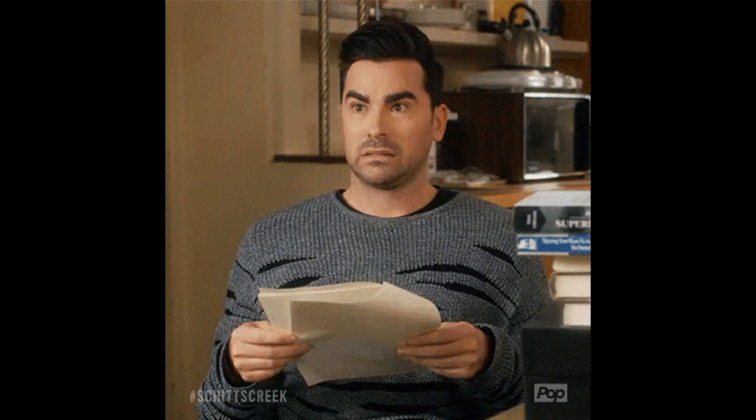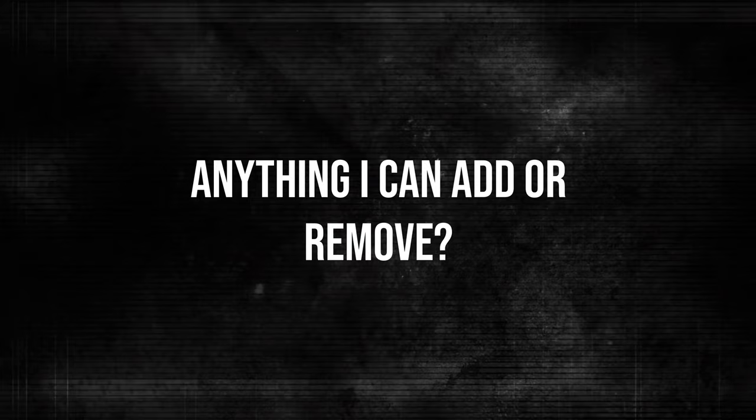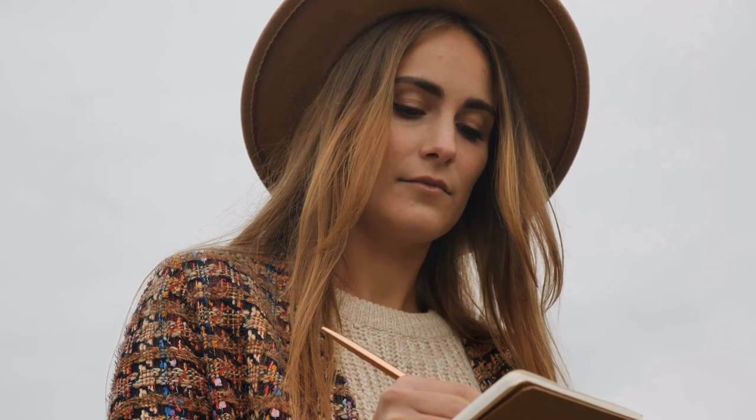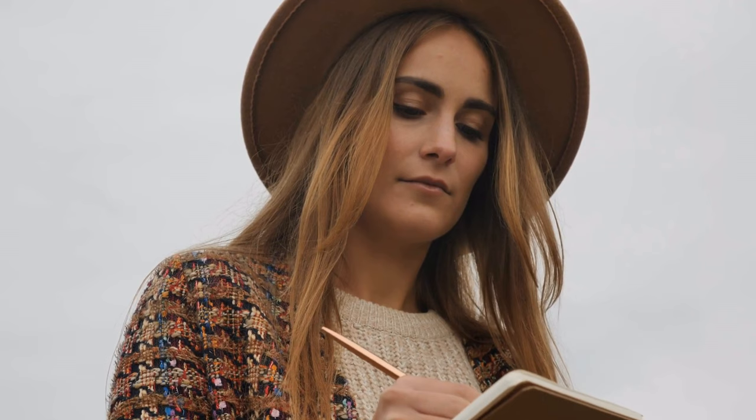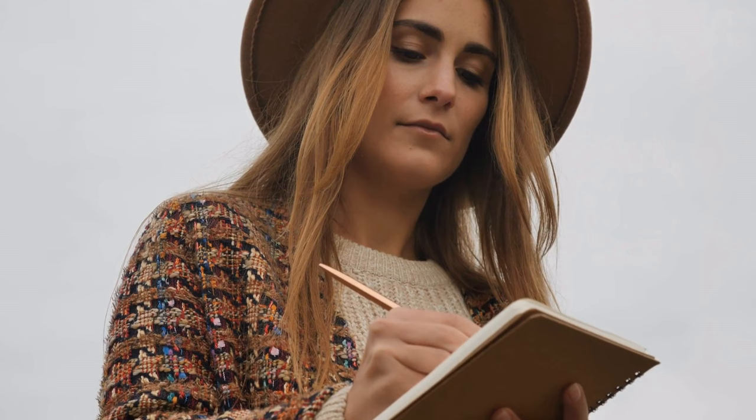There are a few things to keep in mind when revising your poem. First, read your poem out loud — this will help you catch any errors or awkward phrasing. Then, take a step back and look at the overall structure of your poem. Is there anything you can add or remove to make it more effective? Finally, pay attention to the details, the words you choose, and how you arrange them on the page. A well-chosen word can make all the difference in a poem.